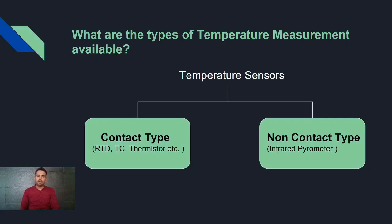In contact type, there are RTD, thermocouple, thermistor, etc. In non-contact type, there are infrared pyrometers. We will see the infrared pyrometers in detail.